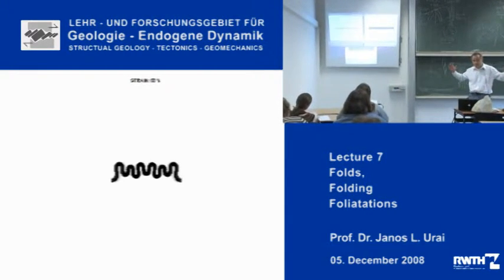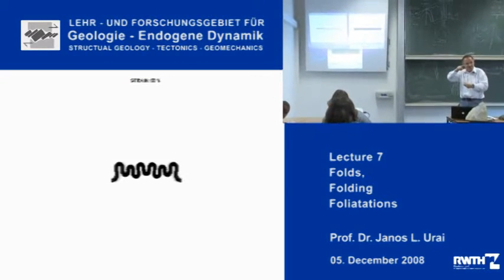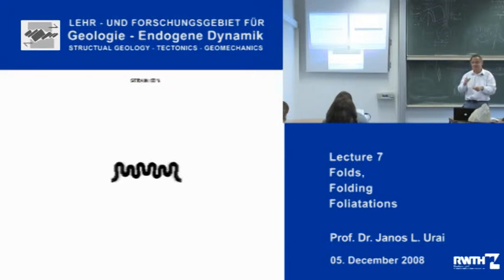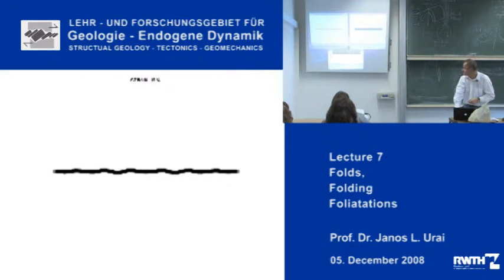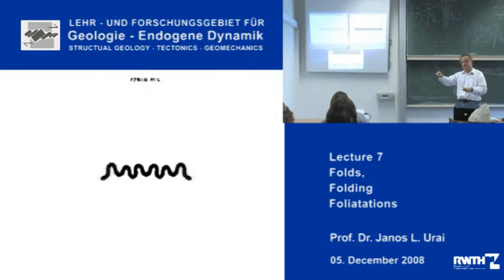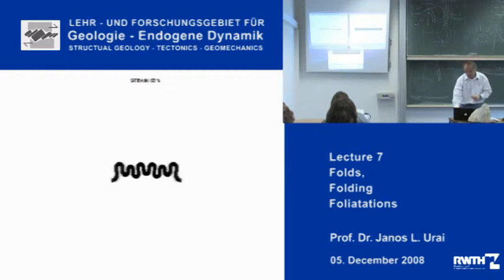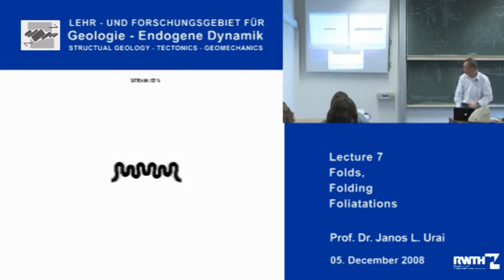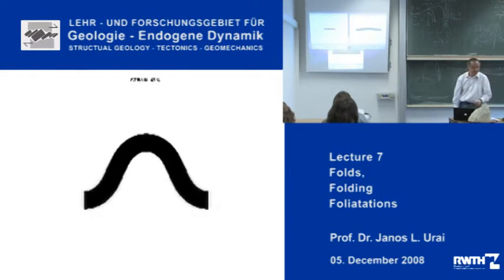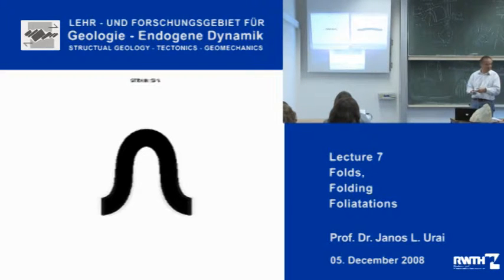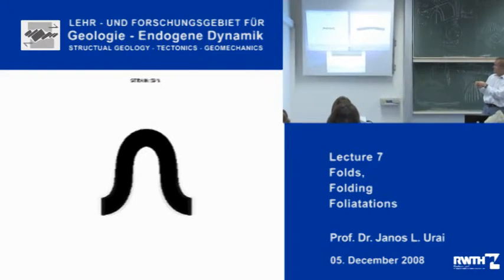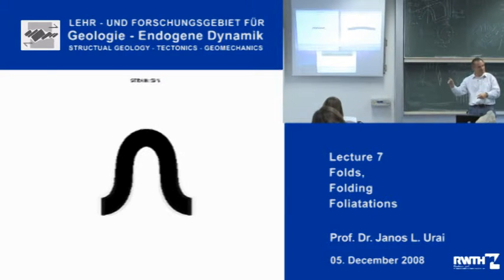What happens first is the layer shortens and develops a little instability — this is where the right wavelength is selected. Then there is a lot of shortening and the folds really form. From this point the folds are just growing bigger and bigger, but they don't change their wavelength except by deformation. This second simulation has a thicker layer with a higher viscosity contrast, so you can see the layer almost chooses the maximum wavelength possible.